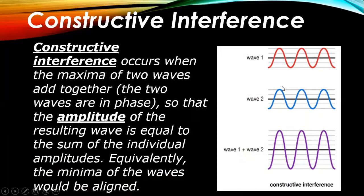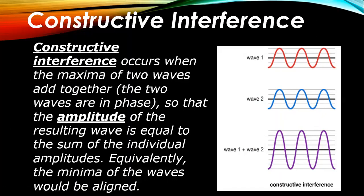If wave one has a crest and wave two also has a crest, then in this interference the resultant wave amplitude will be greater than either individual wave, and we call it constructive interference. Constructive interference is always in-phase. In-phase means crest meets crest and trough meets trough, so the amplitude of the resultant wave is increased.